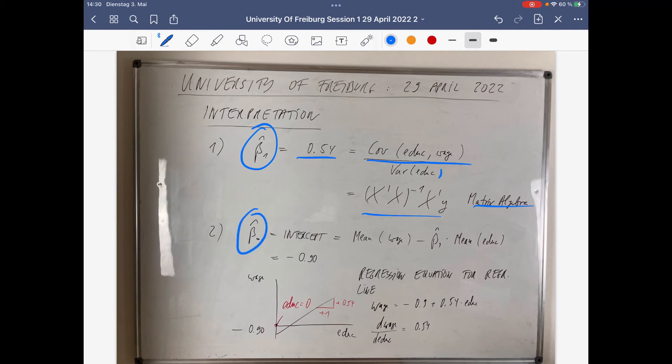The intercept is just mean of the endogenous variable, which is in this case wage, minus the beta 1 hat times the mean of the exogenous variable, which is in this case education.